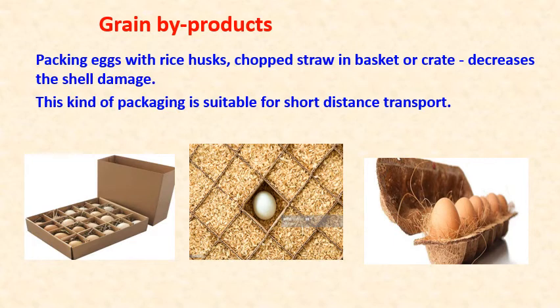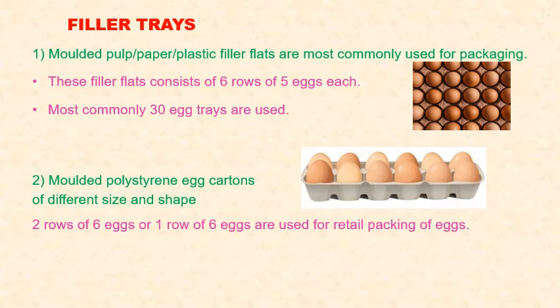Use of grain byproducts for packaging: packing eggs with rice husks or chopped straw in baskets or crates decreases shell damage, and this kind of packaging is suitable for short distance transport. Filler trays are of two main types: molded pulp, paper, or plastic filler flats, most commonly used for packaging, consisting of six rows of five eggs each — most commonly 30 eggs in one tray. The second category is molded polystyrene egg cartons of different size and shape, which may have two rows of six eggs or one row of six eggs and are most usual for retail packs.